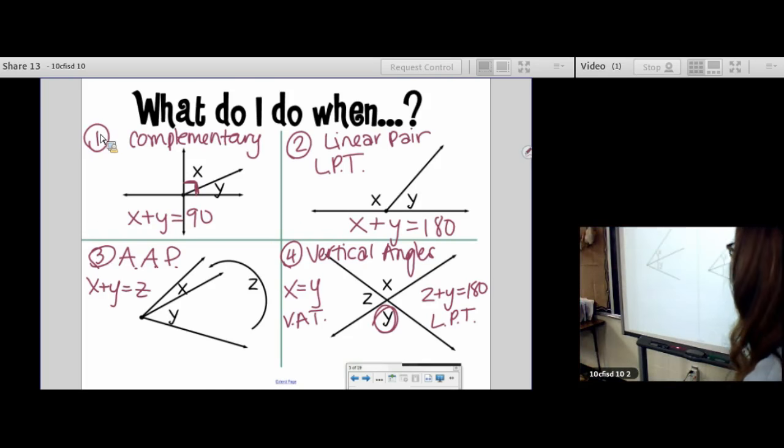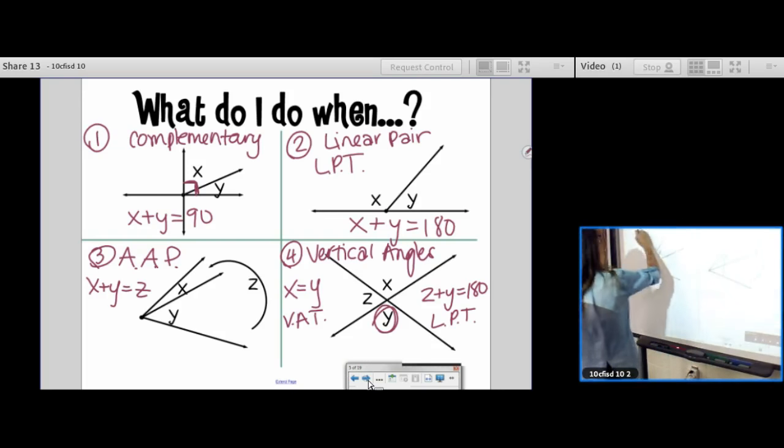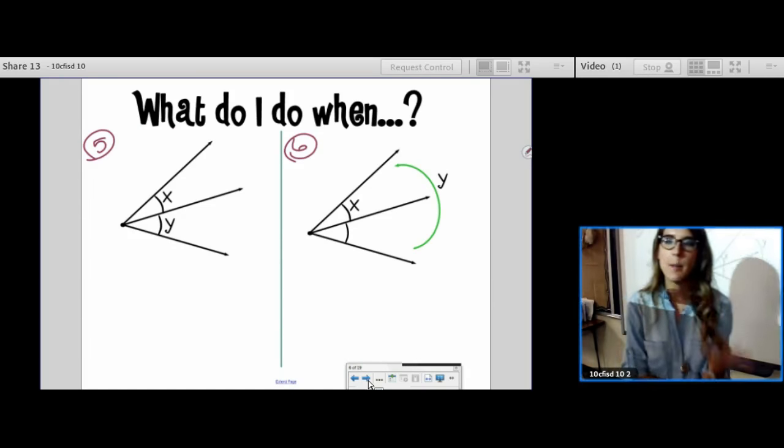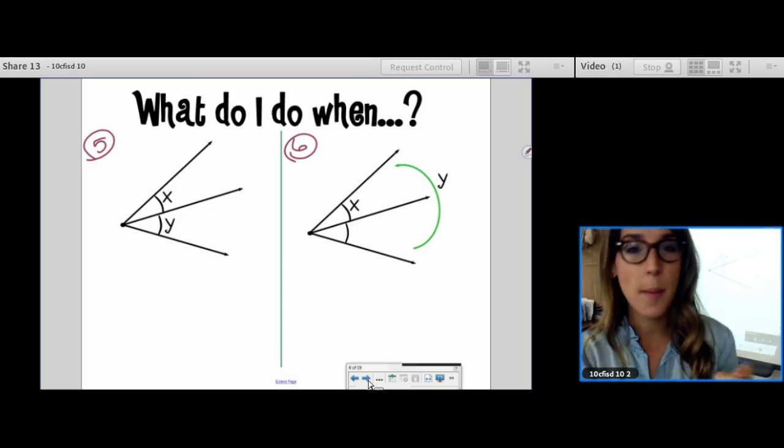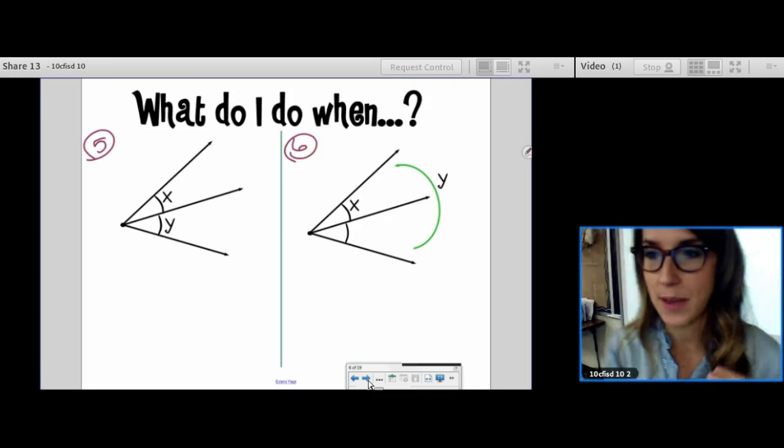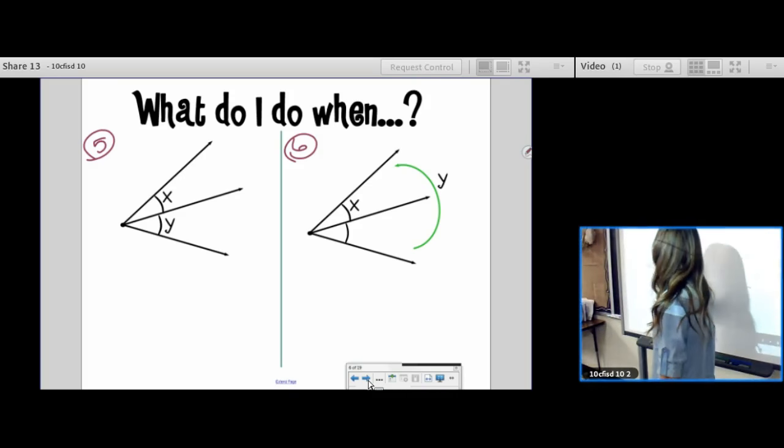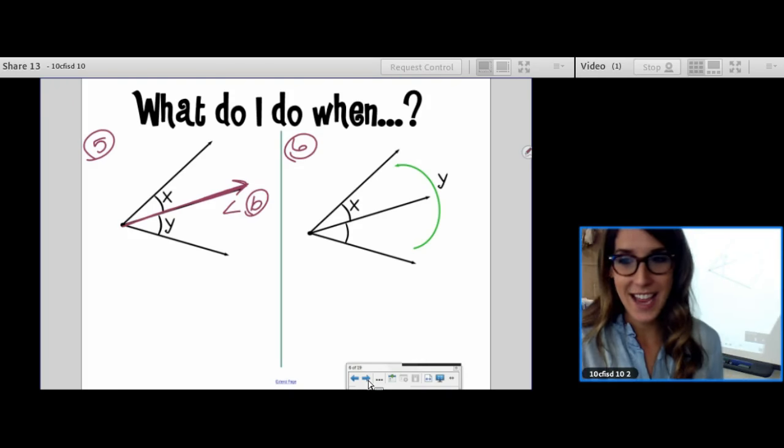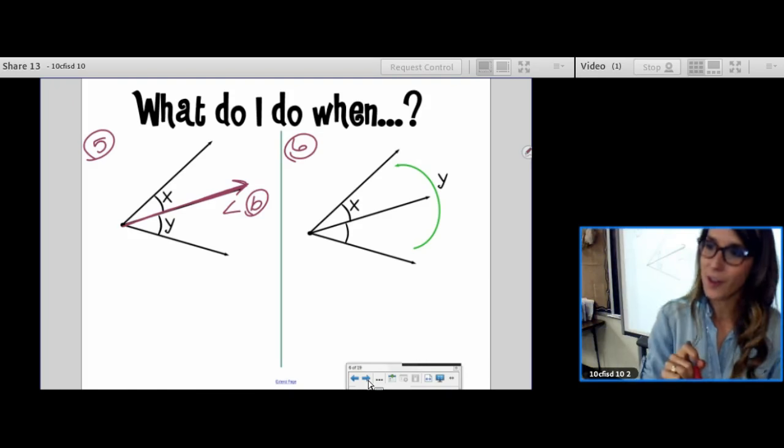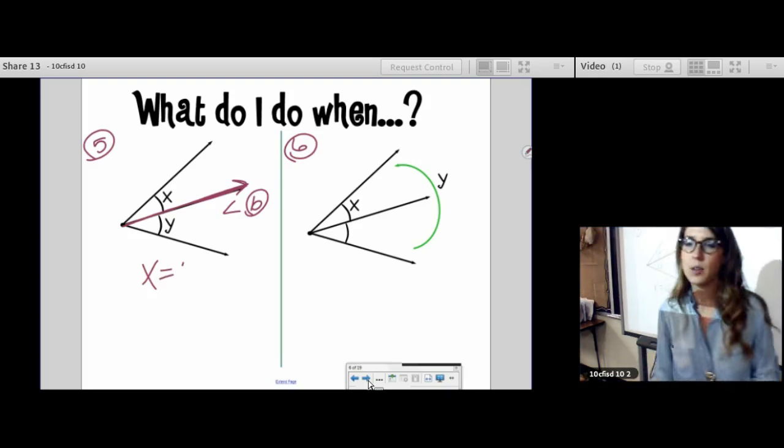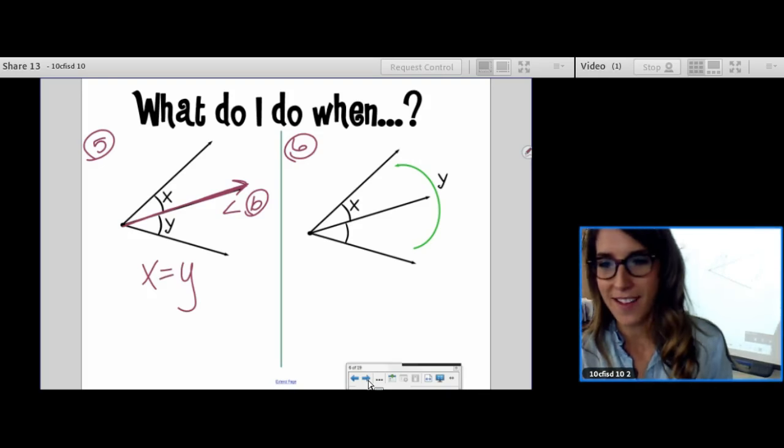Last set of strategy slides. Number five and six. There's a symbol on these pictures that didn't show up on the other slides. I see arcs. Arcs means something has happened. Arcs means that this is not just a plain old ray. Arcs means that that ray is an angle bisector. So because the angle has been bisected, not because of vertical angles, but because the angle has been bisected, I can set x equal to y and move along my merry way.